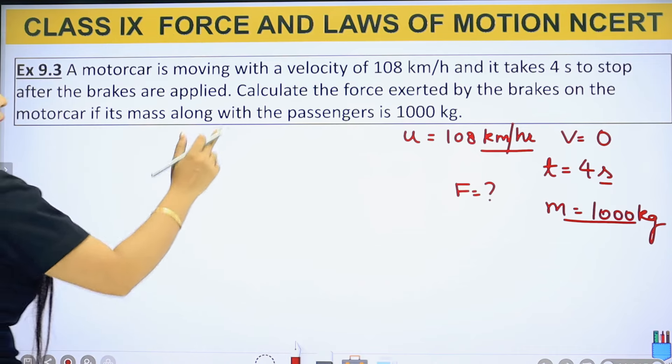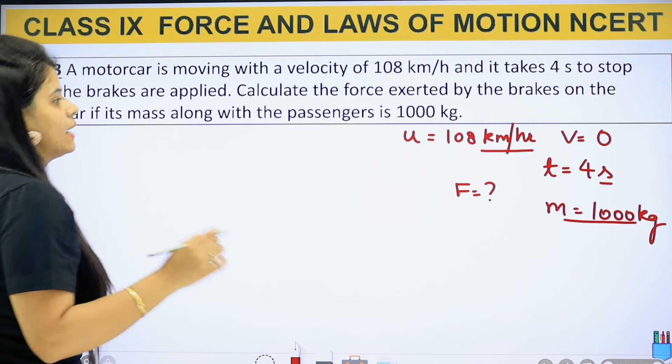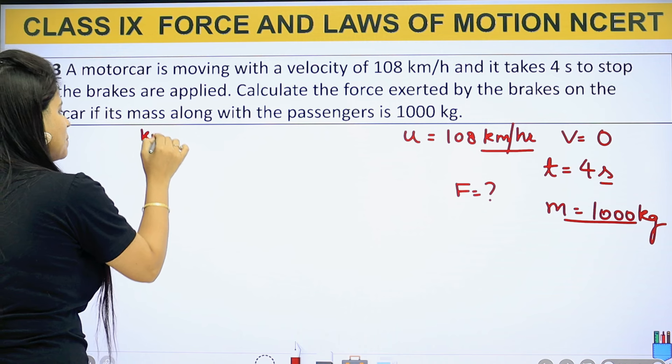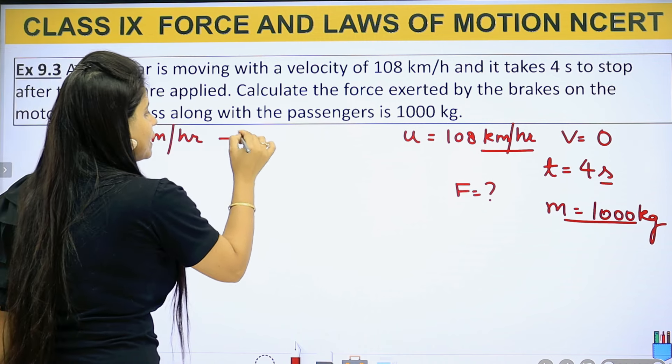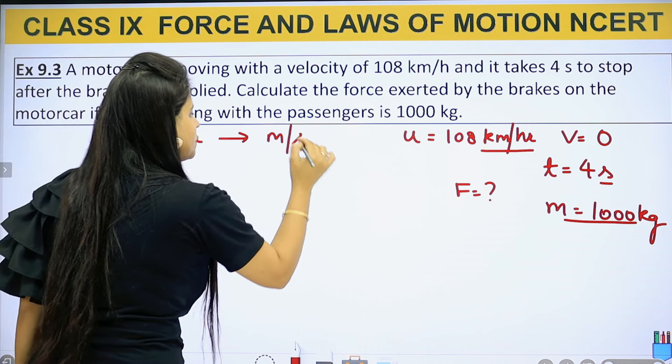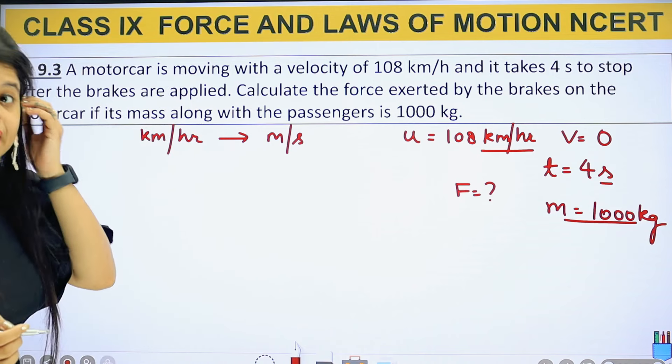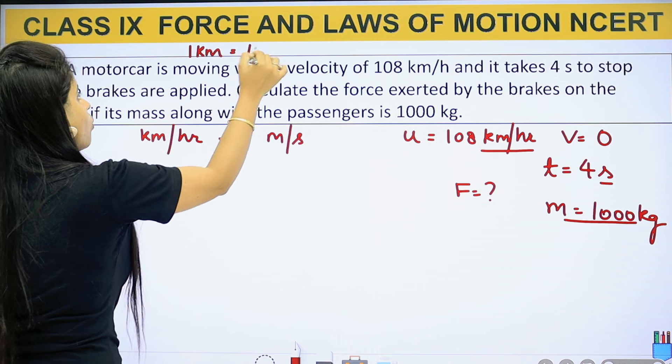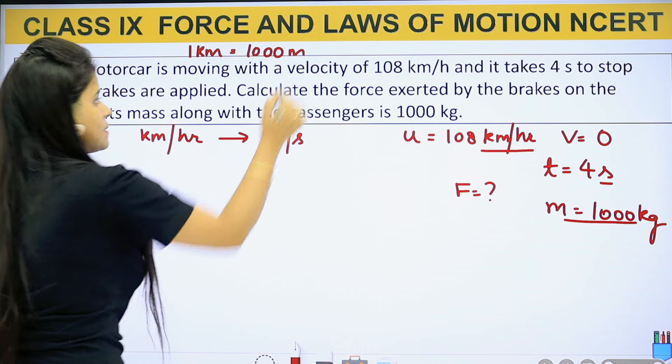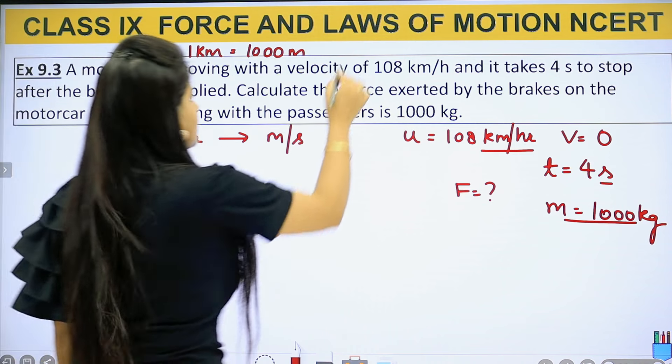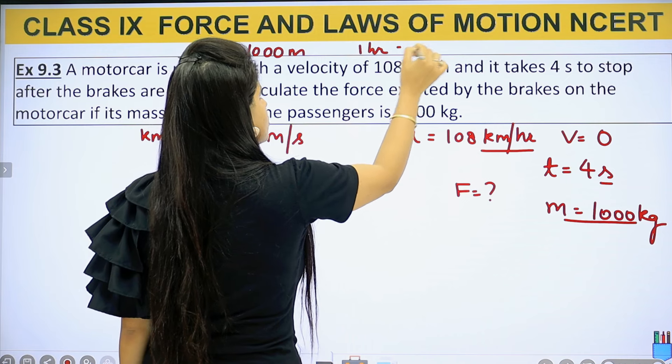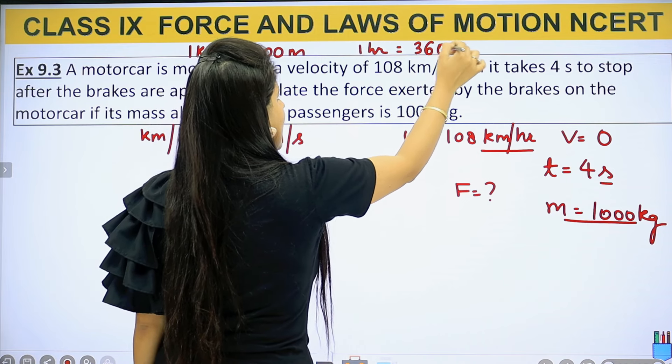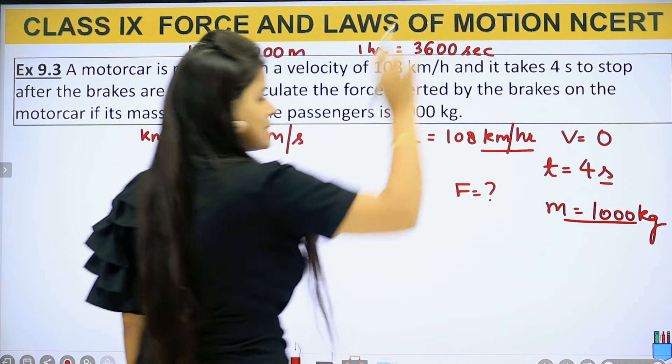Let's change it first. Let's see km per hour. This is also a little basic, but I will explain it. You have to go from km per hour to meter per second. Here we know that 1 km equals to 1000 meters, and similarly, 1 hour equals to 3600 seconds.